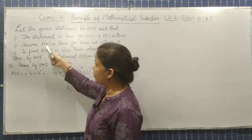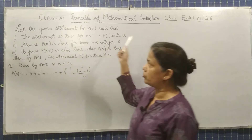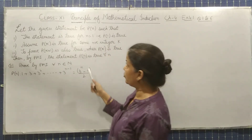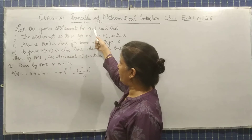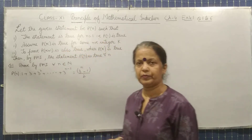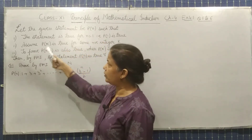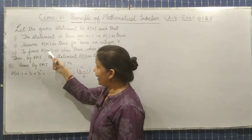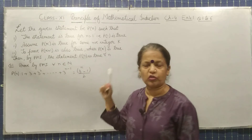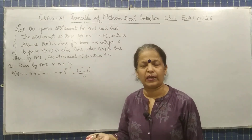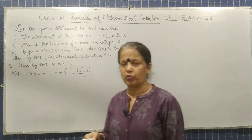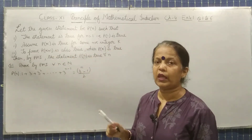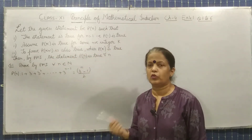Then we have to assume that P(K) is also true for some positive integer K — meaning instead of N, you will take K. In the third point, you have to prove that P(K+1) is also true when P(K) is true. If P(K) is true, which we are assuming in the second point, then P(K+1) is also true.